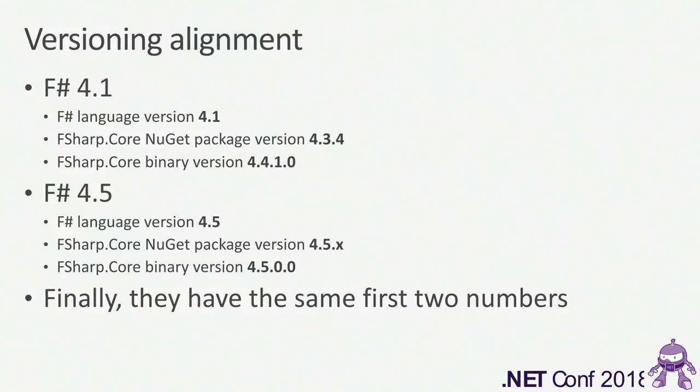Similarly, the NuGet package where the FSharp.Core binary lives had to rev in various ways that forced the numbers to become different, creating a confusing mess. Now with this version, it's F# language 4.5, FSharp.Core NuGet package is 4.5.patch version, and the binary version is 4.5.0.0. The first two numbers are the same, and we intend to keep it that way. Hopefully this makes everybody's lives a lot easier, especially for beginners.